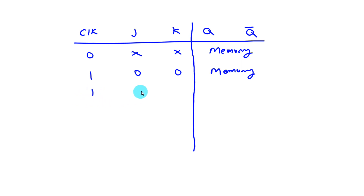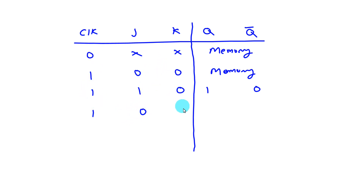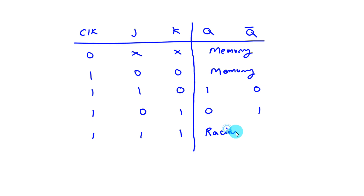If clock is 1, J is 1 and K is 0, then we will get Q as 1 and Q bar as 0. Again, if clock is 1, J is 0 and K is 1, then we will get Q as 0 and Q bar as 1. If clock is 1 and both J and K are 1, then we will get toggling.